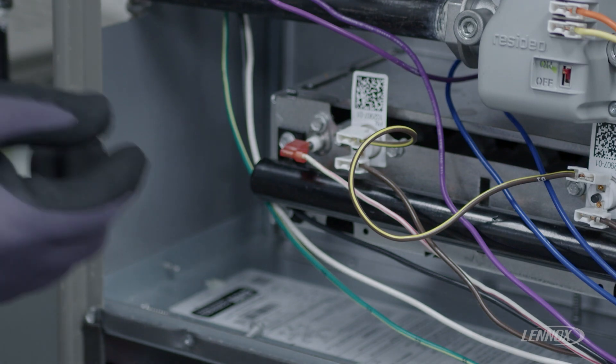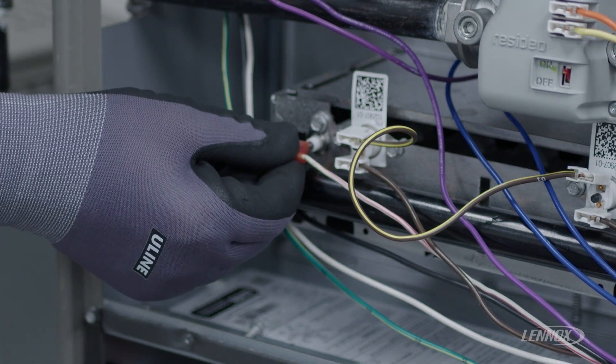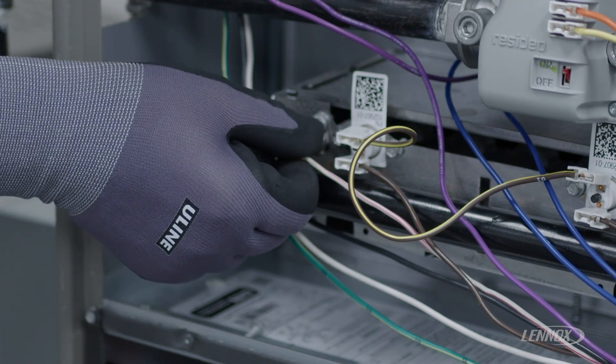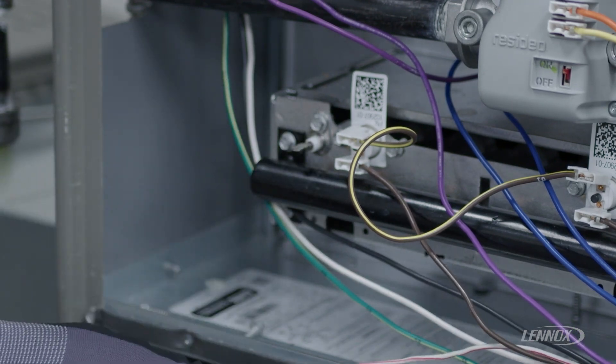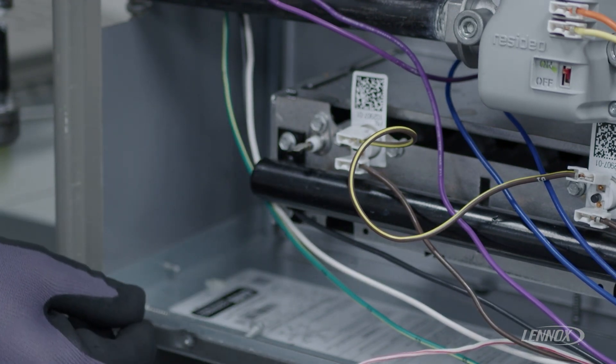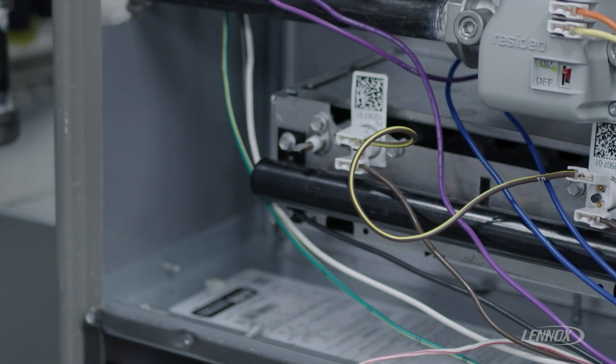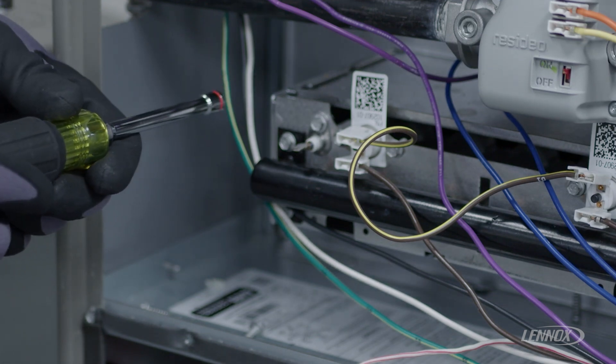As you notice in this furnace, this is the flame sensor. We want to disconnect the flame sensor lead from the 5/16 spade. You'll notice that it's connected with one quarter inch screw holding it to the burner assembly.